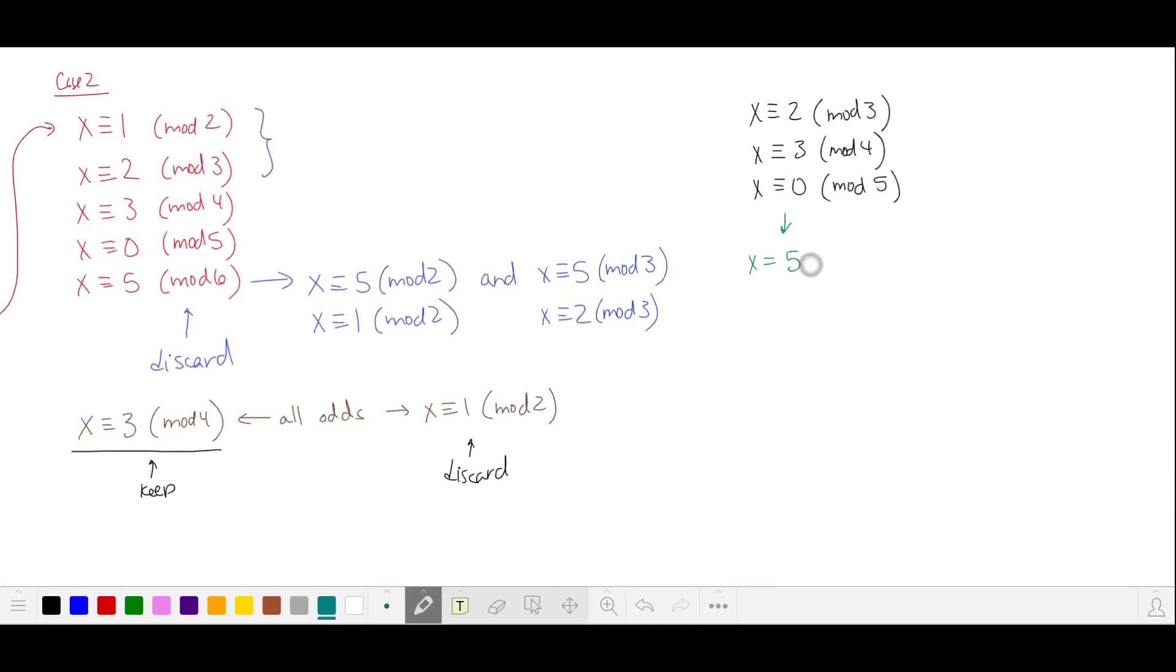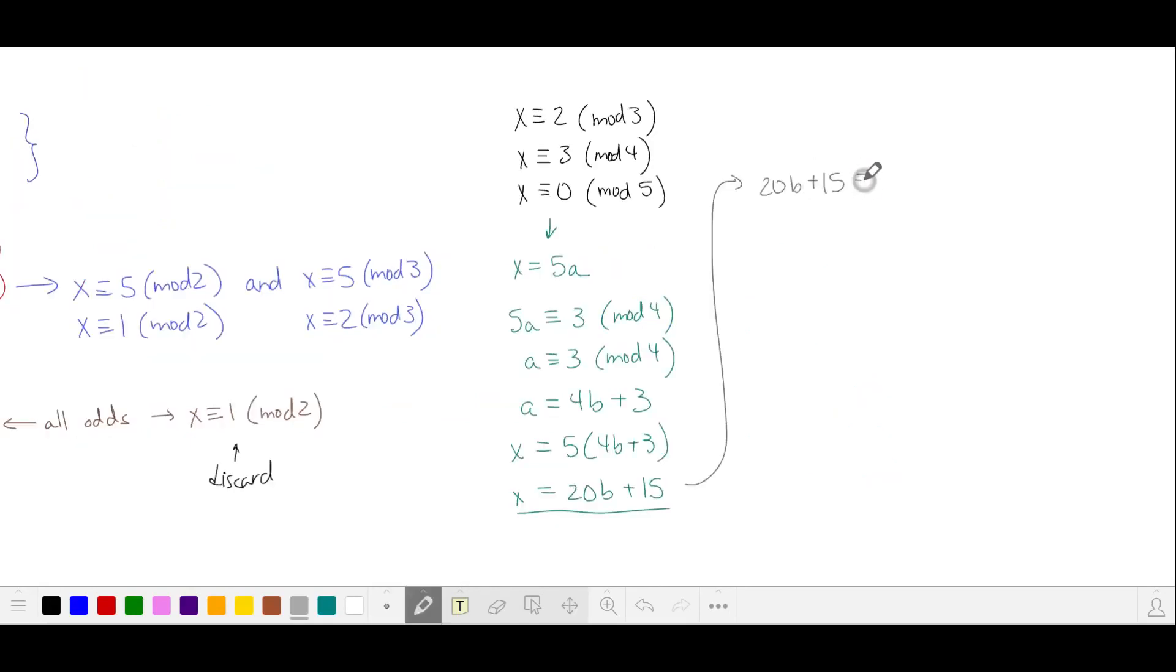We'll start with this last one. x is a multiple of five. Plug it into the previous equivalence. 5a is three in mod four. Simplifying and substituting back in for x, x is 15 more than a multiple of 20. And we'll put this into the first equivalence to mod three and simplify. So our next set of solutions are going to be 35 in mod 60.